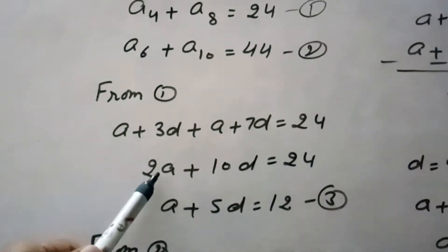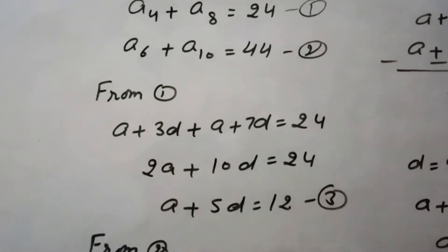So A plus A is 2A, 3D plus 7D equals 10D equals 24. By taking 2 common from this, A plus 5D equals 12. So this is equation number 3 here.